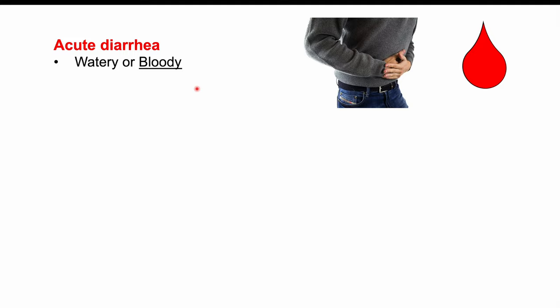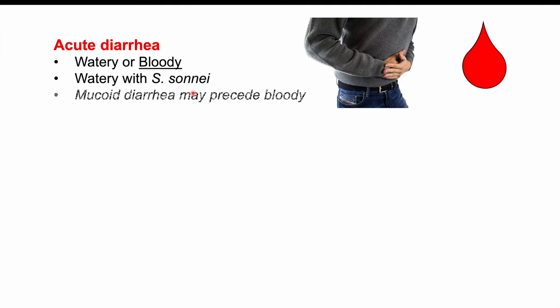Watery diarrhea is seen predominantly with Shigella sonnei infections. When patients experience bloody diarrhea, it is often mucoid at first — they have mucusy diarrhea that then progresses to bloody diarrhea.